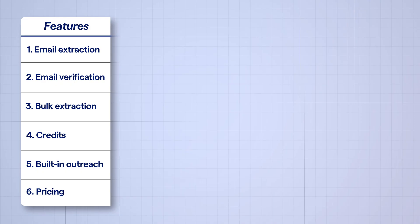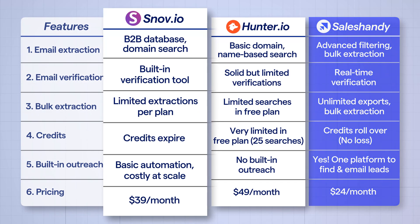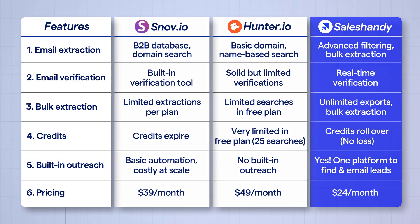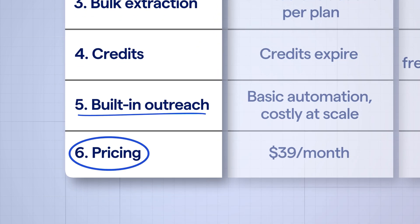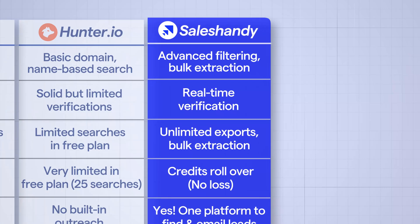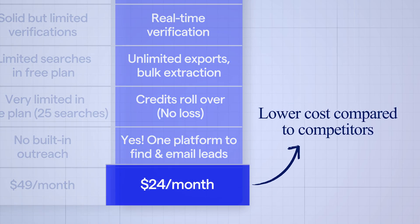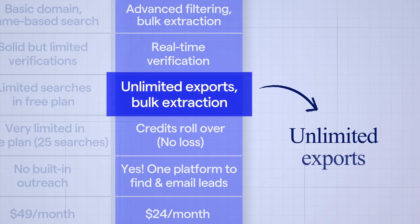Which one should you choose? Let me honestly break it down. If you just need a basic email extractor, then Snov.io and Hunter.io will do the job. But if you want a tool that does everything — literally email extraction, verification, and outreach — without draining your budget, SalesHandy Lead Finder is the best choice. It provides more accurate leads, lower costs compared to competitors, no wasted credits, plus unlimited exports.